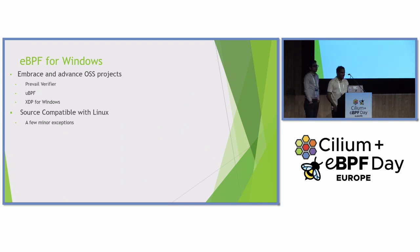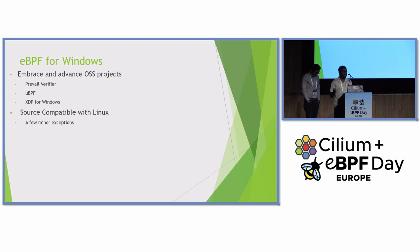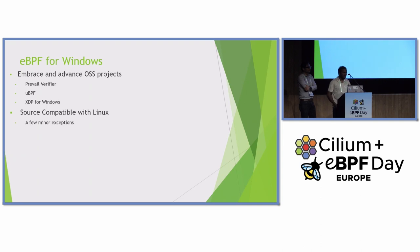eBPF for Windows is an open source, MIT-licensed project, and we wanted to embrace open source and extend it to Windows. eBPF for Windows leverages other open source projects: the prevail verifier, which makes sure eBPF programs are safe and secure to run in the kernel; uBPF, which is used for JIT compilation and as an interpreter for eBPF bytecode; and XDP for Windows, which is a separate open source project that we leveraged to support the XDP hook in Windows when running Cilium programs.